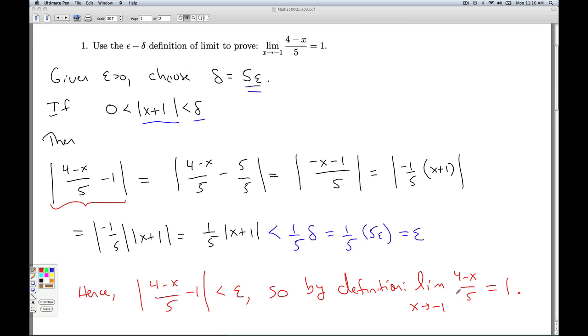Now, as we talked about in class, the delta that you typically find here is sort of the biggest delta. If epsilon is 1, then our delta would be 5 times 1, which is 5. Well, I could use delta equals 4, 3, 2, 1, a half, .001. All those deltas would work.